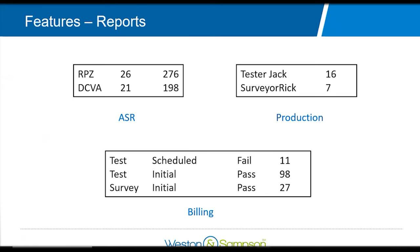There are many pre-made reports in the backflow software. The report everyone is most concerned about is the annual statistical report, the ASR. You can run it after the end of the year and it will give you all the numbers to plug into the ASR for the state. There are also production reports to see how many tests or surveys each tester did in a given time frame, a billing report, and many other reports to manage your work and invoices.